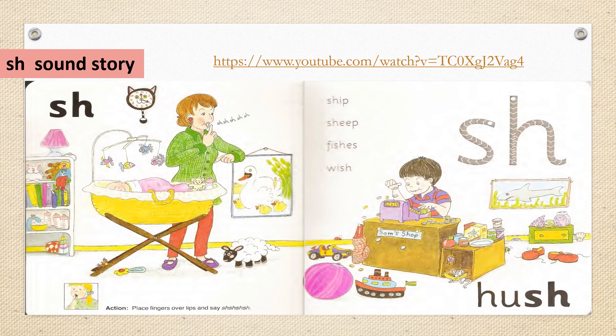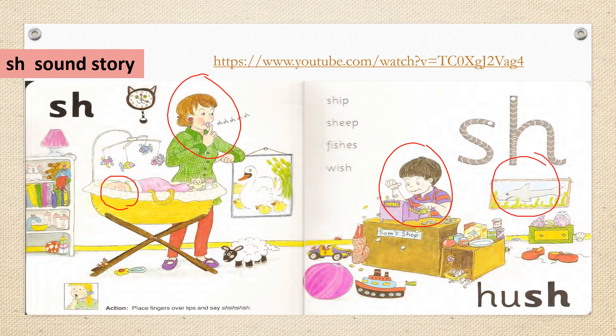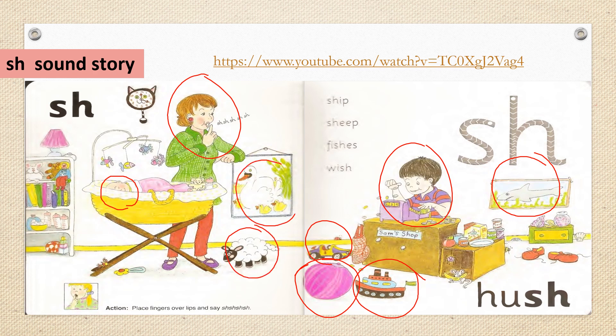We will start with the story of the sound. Can you tell me, Grade 1, what can you see in this picture? Yes, so here we have mommy and this is a brother. Look here — in the bed we have a baby. This is shark, ship, car, ball, sheep, duck, fish.